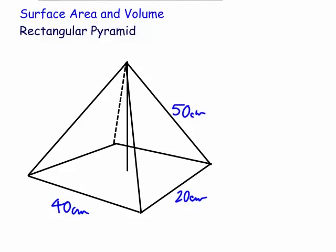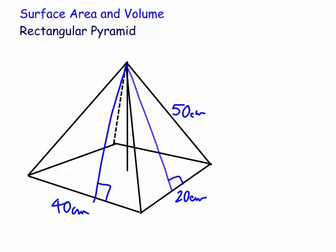There are a few measurements missing. We're going to need the slant heights of the triangular faces to find the surface area, because we need to find the area of the triangular faces. The base would be just 20 by 40.